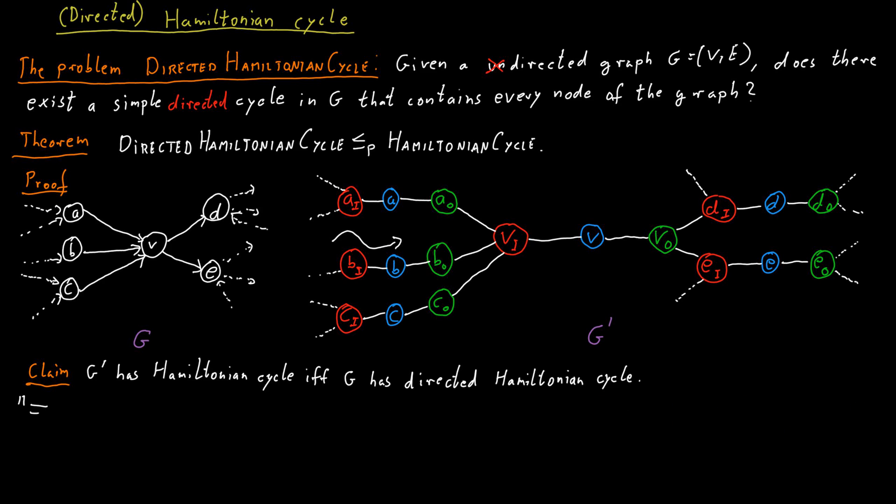So for the opposite direction, suppose we have a Hamiltonian cycle in this undirected graph. Then we also get a Hamiltonian cycle in the directed graph that is directed in the correct way.